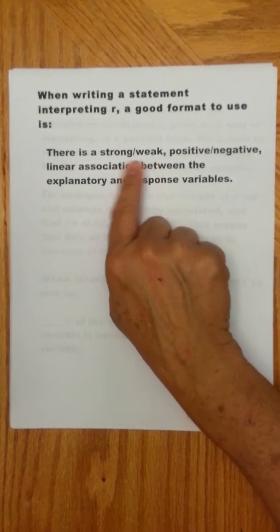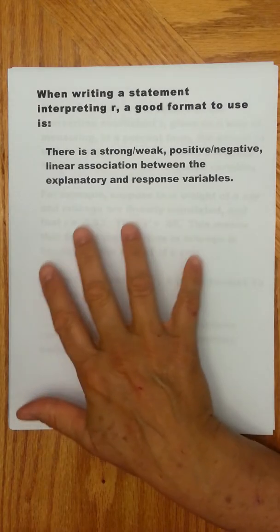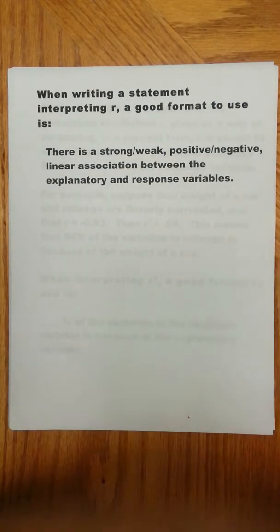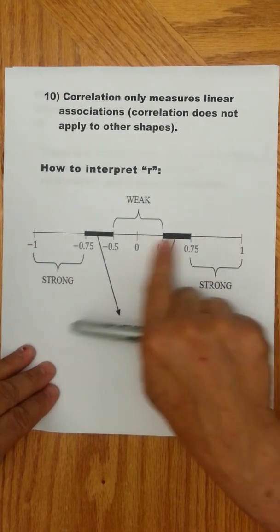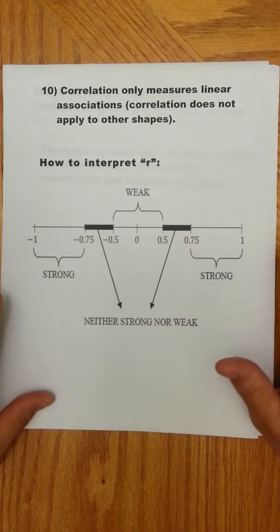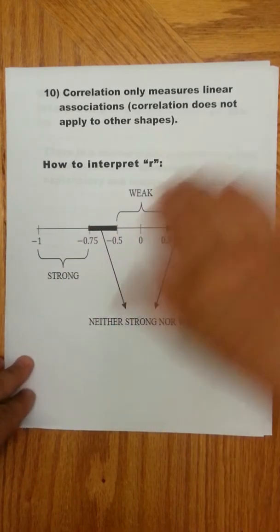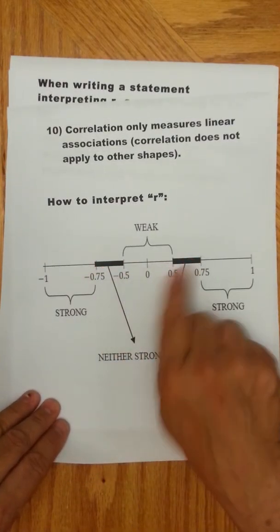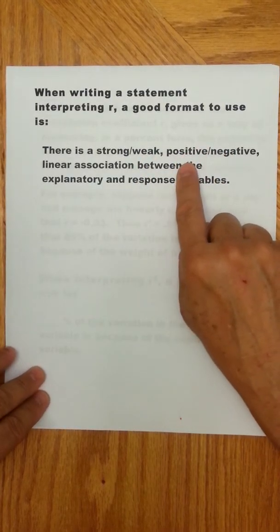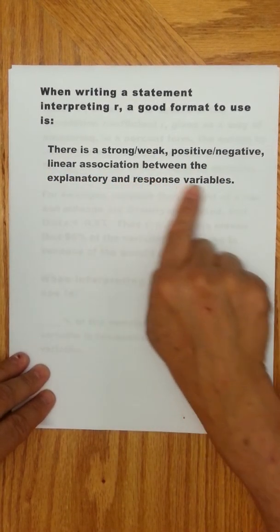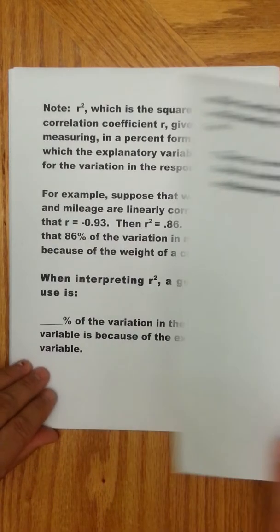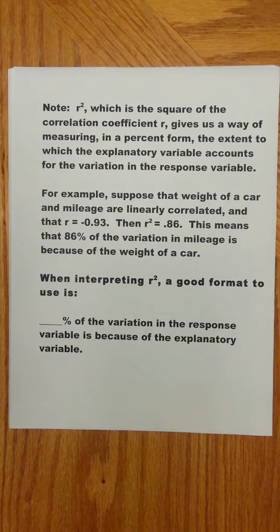Now when you're interpreting the correlation coefficient, here's a good format to use. You would always want to say whether there's a strong or a weak. Sometimes some books use moderate. We're going to kind of not lean on the fence. It's going to be strong or weak. And the break point in general, in general, although we had three different categories here, let me kind of pull that back up. Though we had these three different areas here, generally a lot of people would agree in practice that 0.75 to 1 and negative 0.75 to negative 1 is strong. Pretty much everything else is really not that good. So the book sometimes uses this as moderate. But you should say whether something is strong or weak, positive or negative association, and then mention that it's linear between the explanatory and response variable.